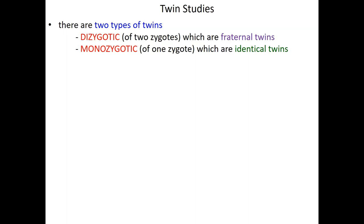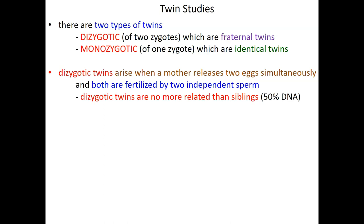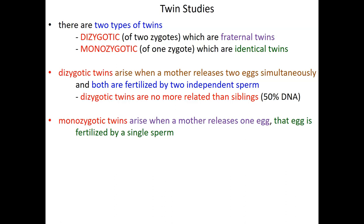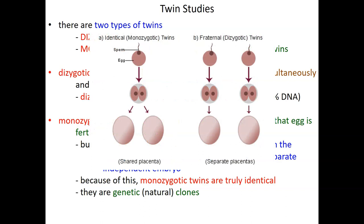Monozygotic twins, meaning from one zygote, are identical twins. One egg is fertilized by one sperm and very early in development that egg splits, giving rise to two separate individuals who are genetic clones — they have exactly the same DNA. Dizygotic twins are two different eggs fertilized by two different sperm, so they have an average DNA relatedness of about 50%, ranging anywhere from 25% to 75% DNA similarity. Monozygotic twins are one egg and one sperm that split early, giving us two true genetic clones.